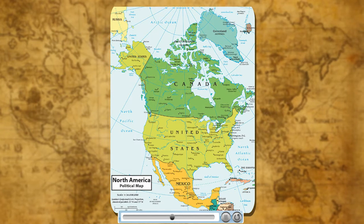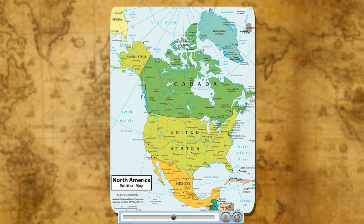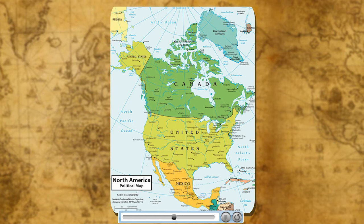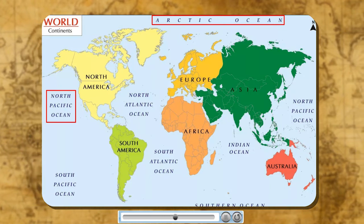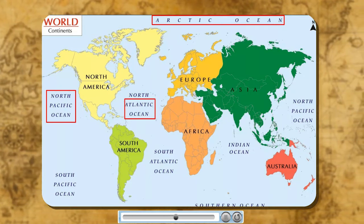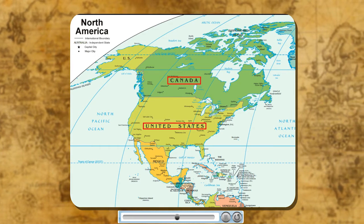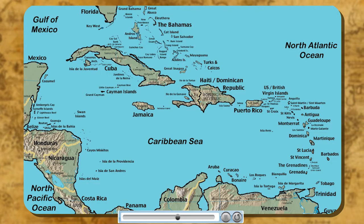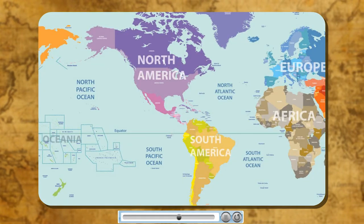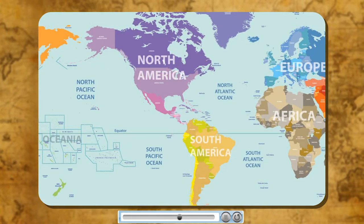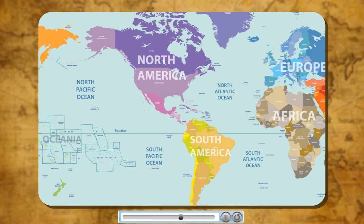North America is the third largest continent of the world. It extends between 7 degrees north and 83 degrees north latitudes and from about 53 degrees east and 180 degrees west longitudes. North America is surrounded by the Arctic Ocean in the north, the Pacific Ocean in the west and the Atlantic Ocean in the east. Canada and the USA together cover about 75% of the total area of North America. Caribbean islands off the Gulf of Mexico are called the West Indies. Greenland is controlled by Denmark. North America is linked to South America by a narrow strip of land called the Isthmus of Panama. The continent lies completely in the northern and the western hemisphere.